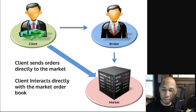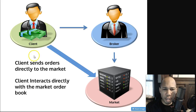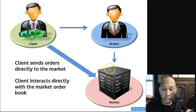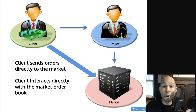Direct market access — basically, as you can see in front of you, normally the way things work is you have a client connected directly to a broker, and that broker has connections to the exchange of the market. They can send your orders out, get fills, fills go back to the broker, and the broker reports those fills back to you.